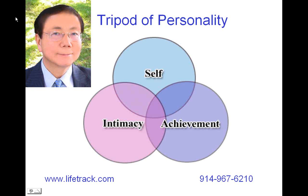In the case of borderline personality disorder, an individual is typically deprived of being able to be happy or at peace with oneself. In the intimacy sphere, borderline personality is threatened by close relationships because closeness makes them feel vulnerable as they become automatically dependent. In the achievement sphere, they have difficulty enjoying and particularly experiencing satisfaction from what they achieve.